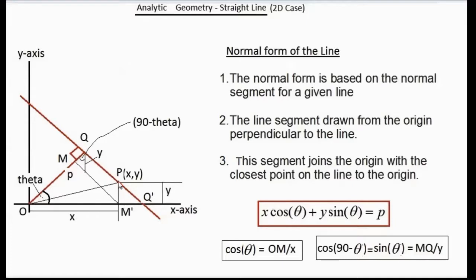Now, to describe the equation of a line in the normal form, the perpendicular which we dropped onto the straight line is called normal to the straight line. So take an arbitrary point p with xy coordinates. From this diagram, o m prime is x and p m prime is y — they are the coordinates of the point p. Also, upon dropping a line perpendicular from m prime to the line o q, we get m m prime is parallel to q q prime.